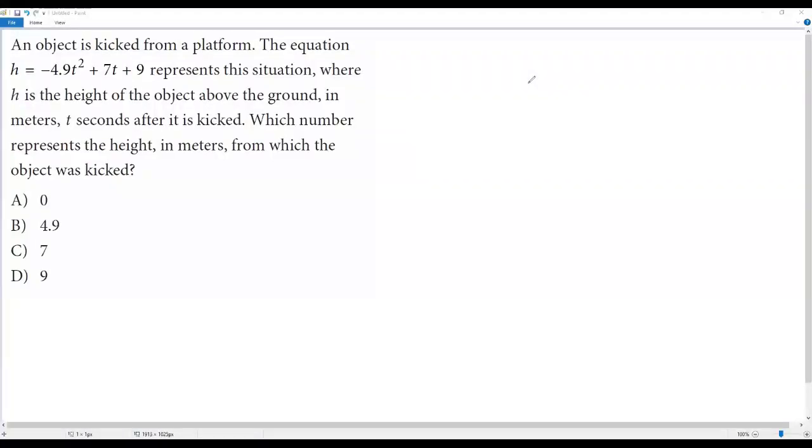Here we have an SAT math question. An object is kicked from a platform. The equation h = -4.9t² + 7t + 9 represents this situation, where h is the height of the object above the ground in meters, t seconds after it is kicked. Which number represents the height in meters from which the object was kicked?